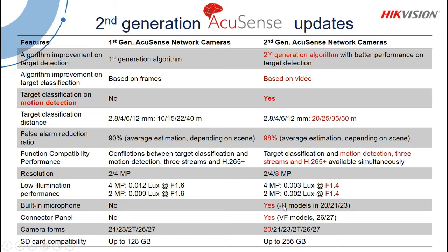Another addition is the dash-U model, which now includes audio. Previously there was no audio; now there is. There is also a varifocal range available, meaning motorized zoom lenses — you click a button and it zooms in and out. So varifocal models are now available on these cameras.